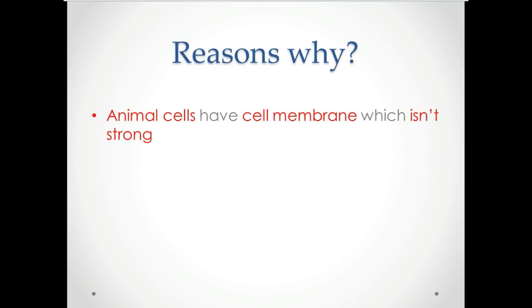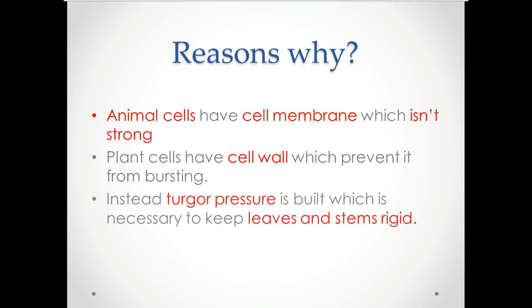Well, here's the reason why. Animal cells have a cell membrane which isn't strong. As I said to you earlier, remember a cell membrane is like a net. It's not really strong, so it can break quite easily. However, a cell wall, as the name suggests, is quite strong. So it prevents the plant cells from bursting. Instead, what happens is turgid pressure is built, and this turgid pressure is very important to keep the leaves and stems rigid. I'll discuss the turgid pressure in a later video.